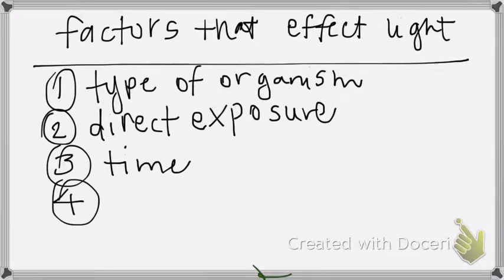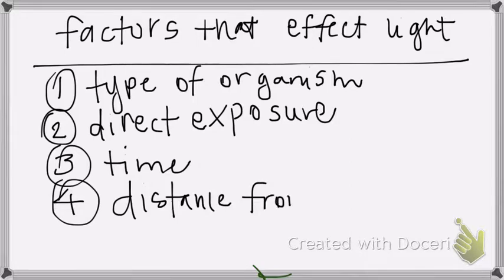And then the fourth one we won't learn in lab. But it makes sense, the distance from the light. If it's right up under the light, or if the light's across the room, it doesn't matter. So these are factors which affect how well the light controls microorganisms. All right. All right. So let's do that.